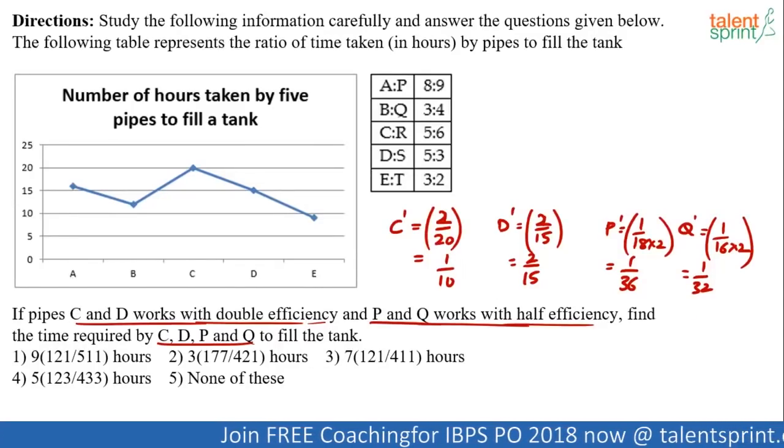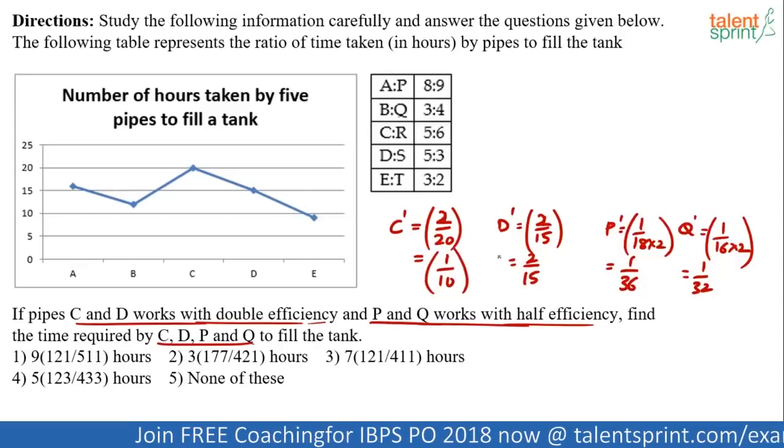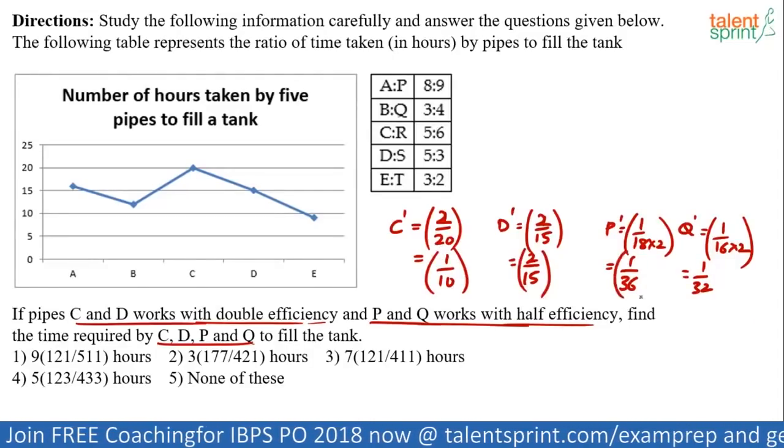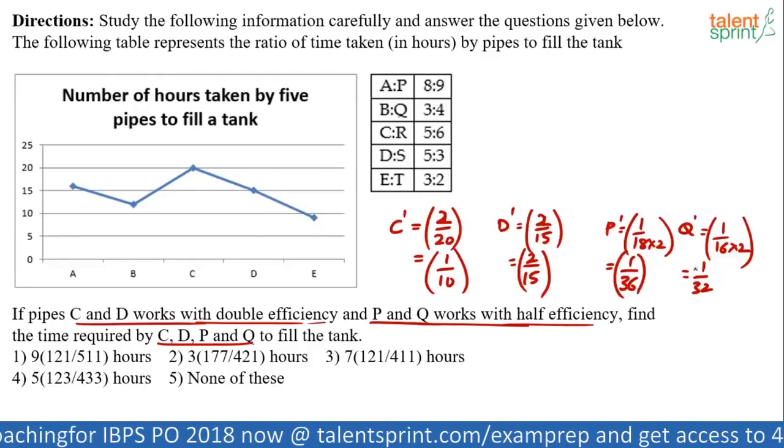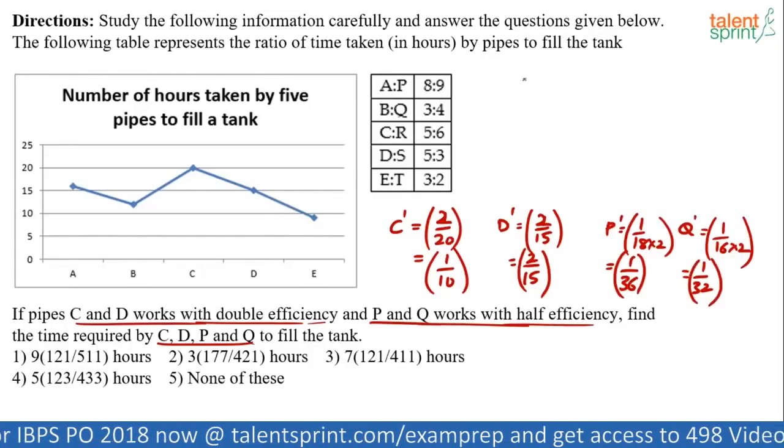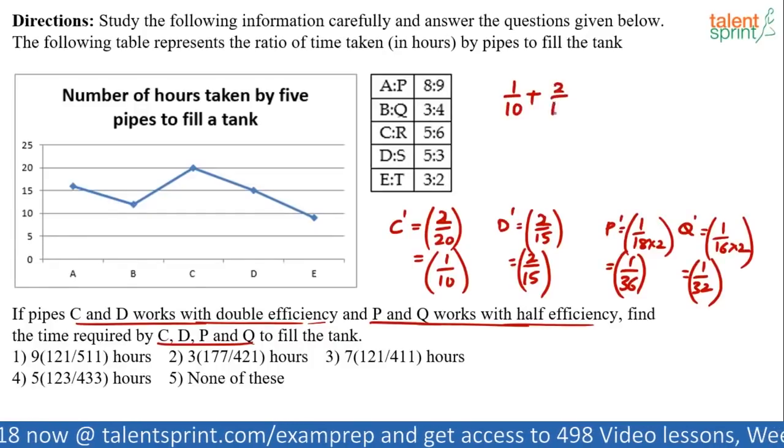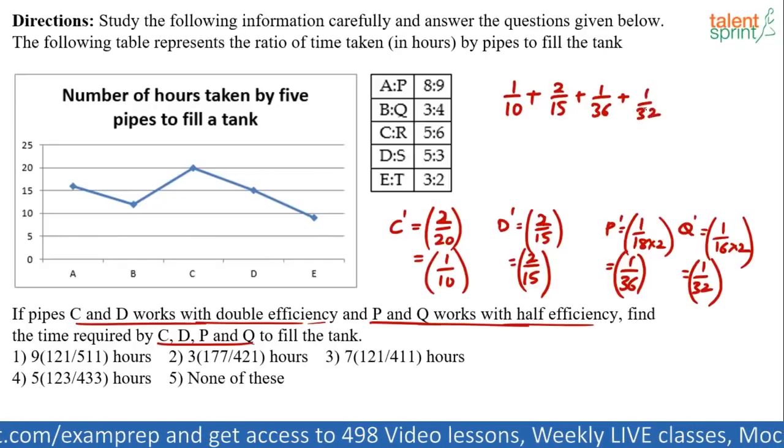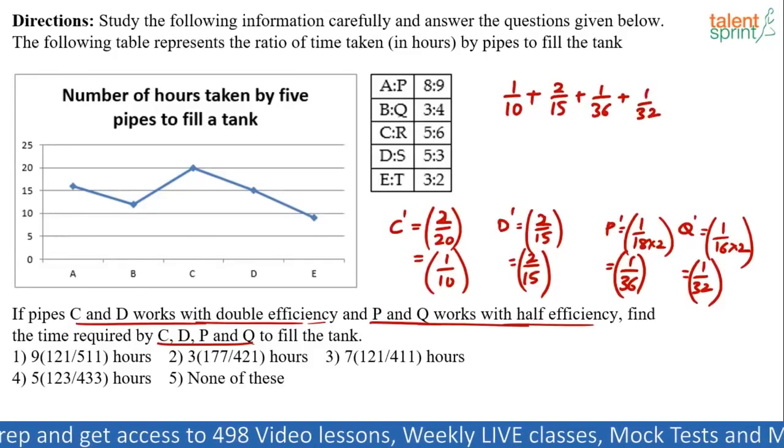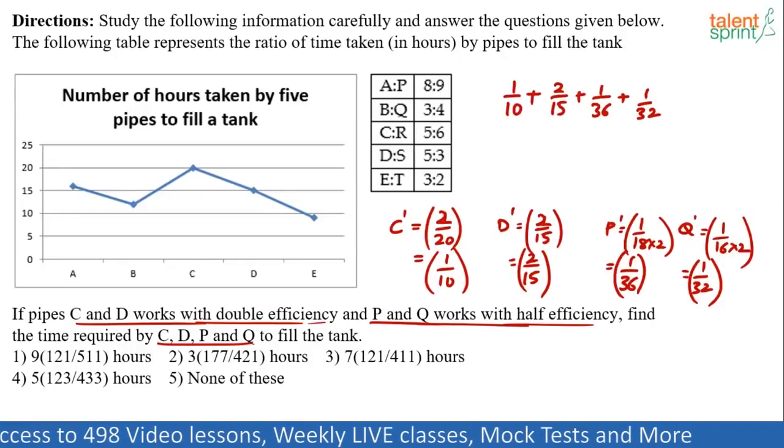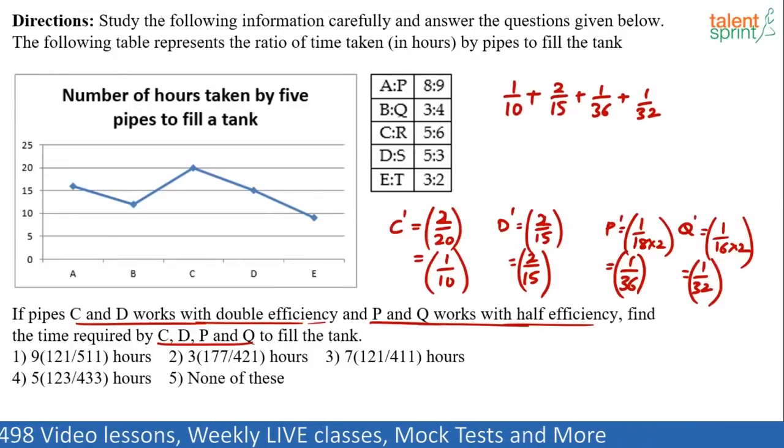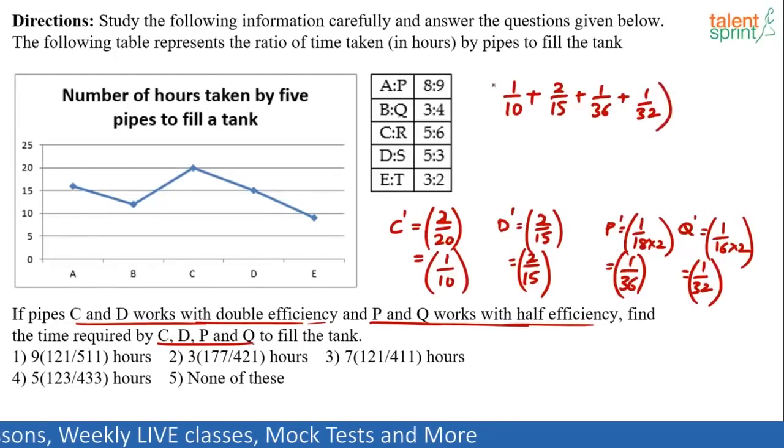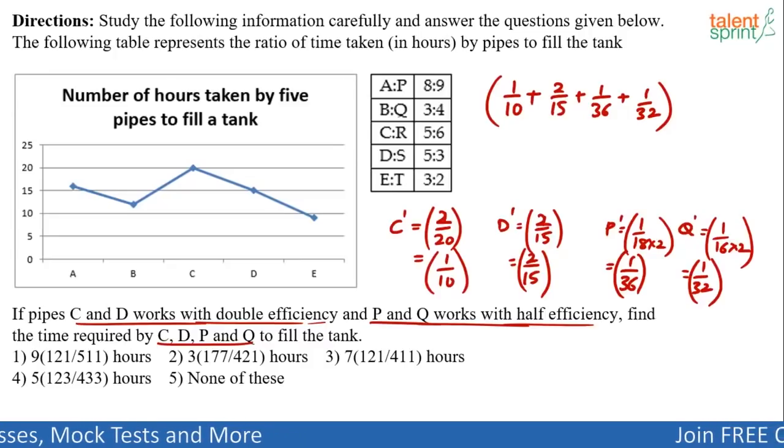You know the efficiencies of C and D and P and Q. Double the efficiencies of C, D. Half the efficiencies of P, Q. And then play with the fractions. Now, what you have to do? Find the time required if all of them work together. So, you know the capacities of all of them. 1 by 10, 2 by 15, 1 by 36 and 1 by 32. Now, find out the total time. So, 1 by 10 plus 2 by 15 plus 1 by 36 plus 1 by 32. Get the LCM. I think that's the key. Find out the LCM. 36 and 32. There lies the solution. This is the final answer. I mean, simplify this will give you the total capacity reciprocated to get the number of hours. You know the total capacity when reciprocated will give you the total number of hours.